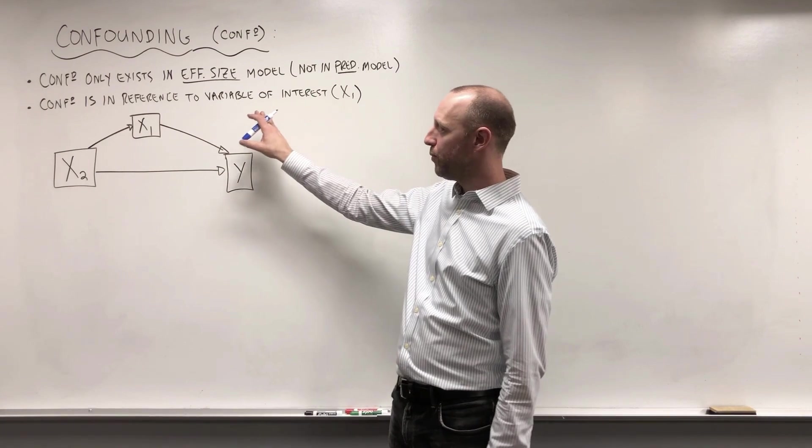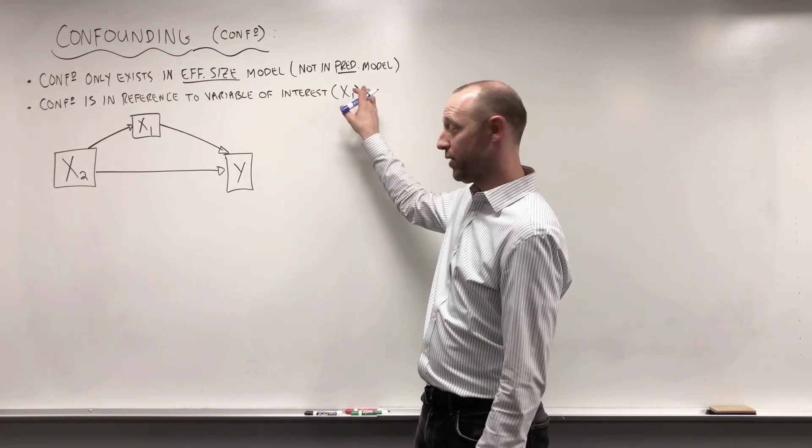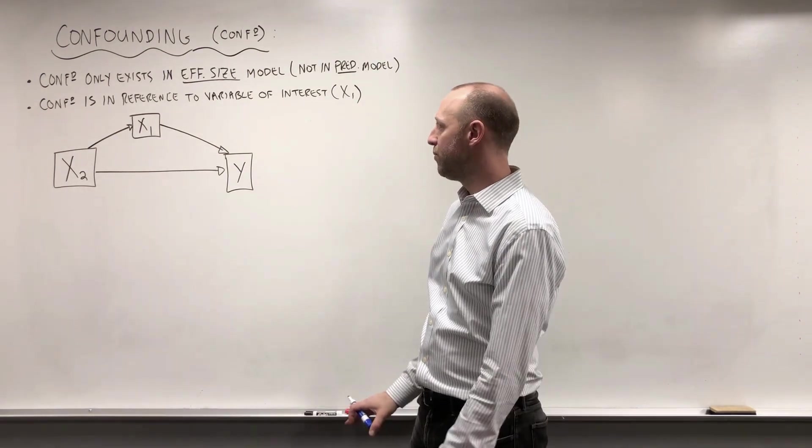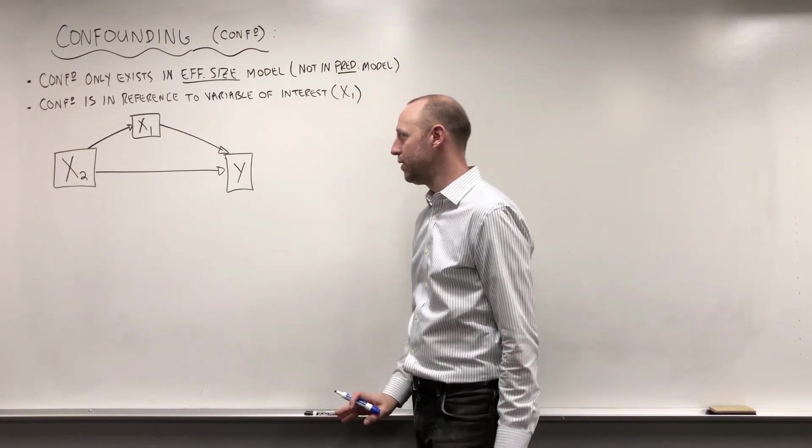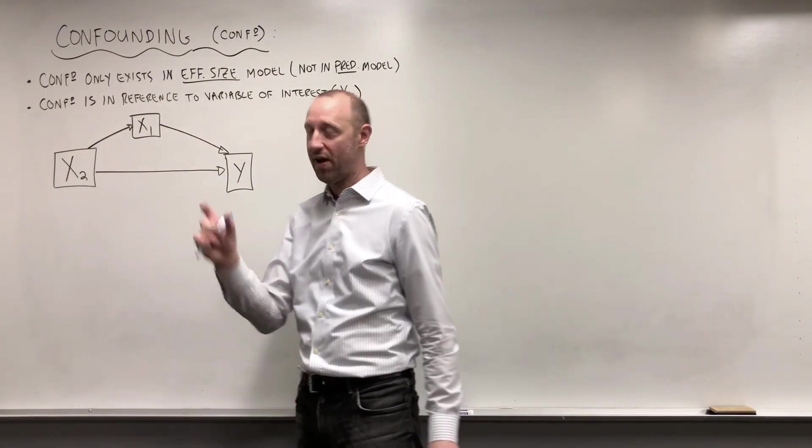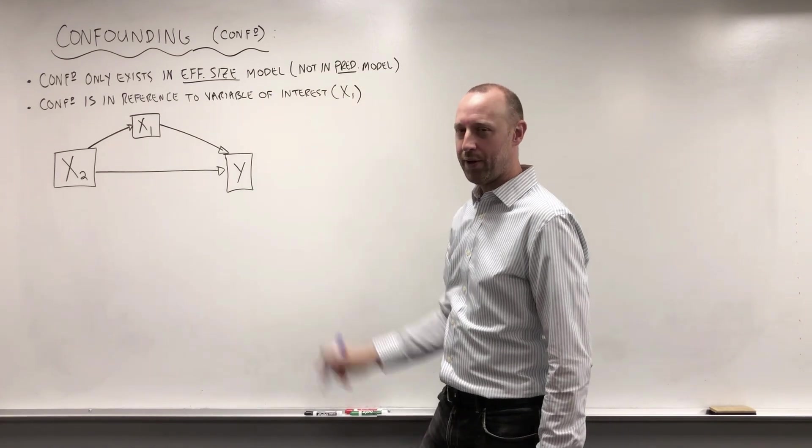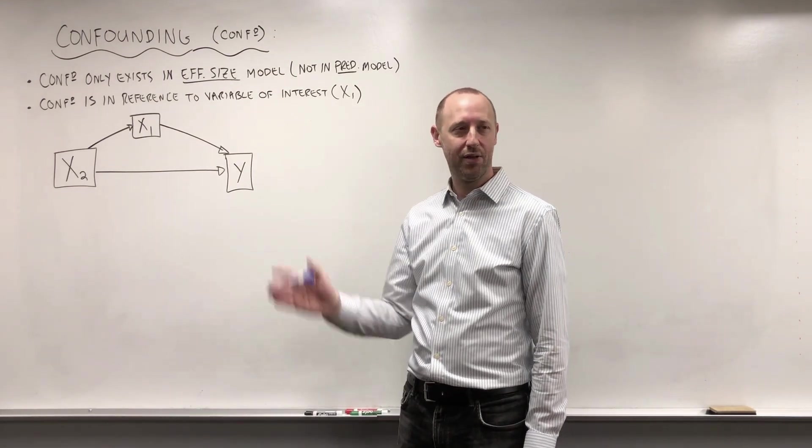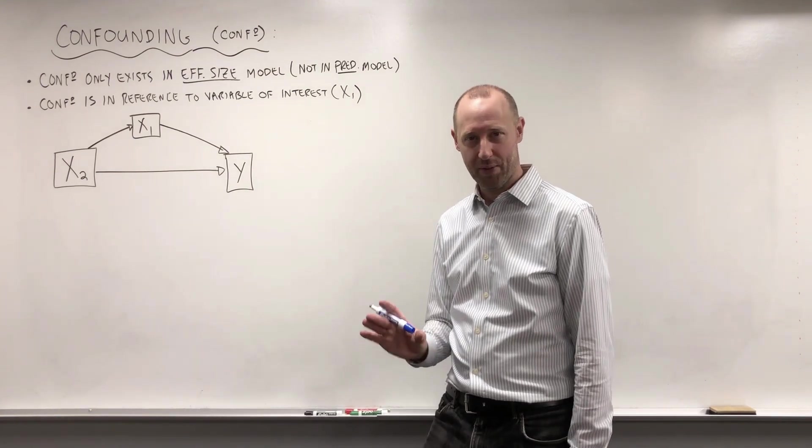Some important points. The first thing to note is that confounding only exists in effect size models, not in predictive models. What confounding means is if the effect of X1 and X2 are stuck together, and we want to be able to separate them, but at the moment they're not. If we're building a predictive model and our goal is to use some data to try and predict the outcome, it doesn't really make sense to say the effect of variable X1 and variable X2 are stuck together, if we're not interpreting variable's effects.